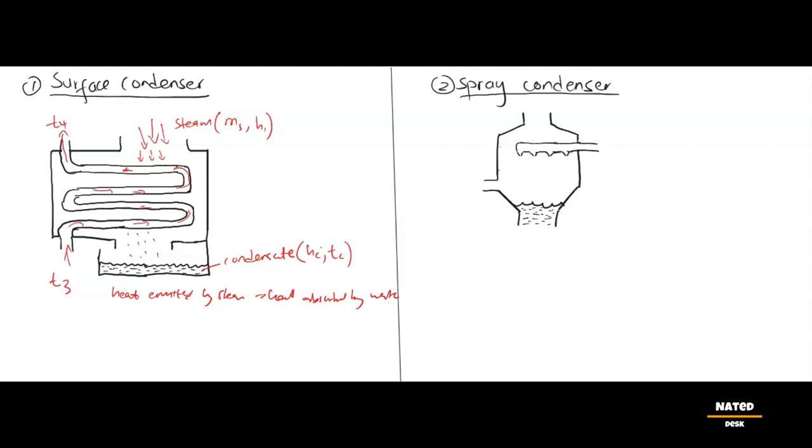Which is written as ms(h1 + hc) = mw·cpw·(t4 - t3). In this equation, ms represents the mass of the steam, also measured in kilograms, kg.